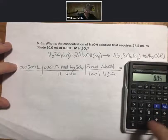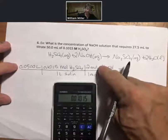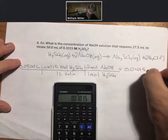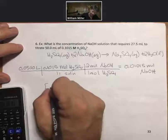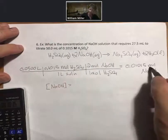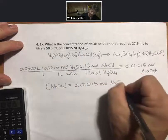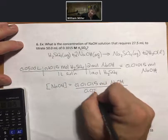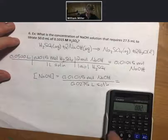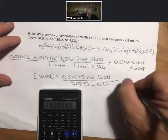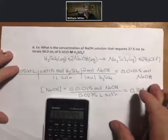0.05 times 0.015 times two. I have now solved for my moles of sodium hydroxide. My next step is to take my moles, divide them by my liters to get my concentration. 0.0369 molar sodium hydroxide.